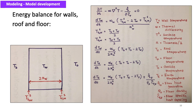Further, surface temperatures are approximated as the mean temperature of the neighboring layers. The same principle has been applied for wall, roof, and floor temperature models, except that the floor has an internal heat generation term such as floor heaters.